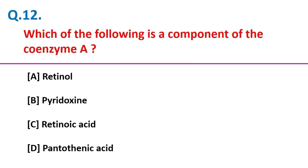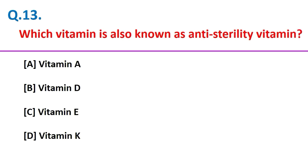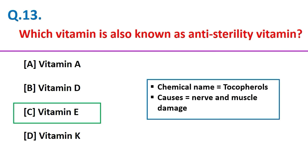Which of the following is a component of coenzyme A? Pantothenic acid. Which vitamin is also known as the anti-sterility vitamin? Vitamin E. Friends, the chemical name of vitamin E is tocopherols, and its deficiency causes nerve and muscle damage.